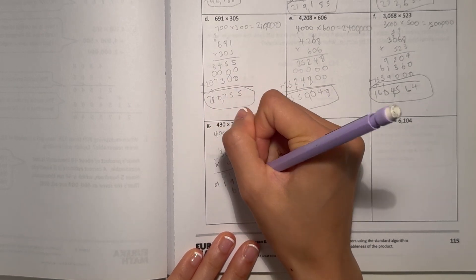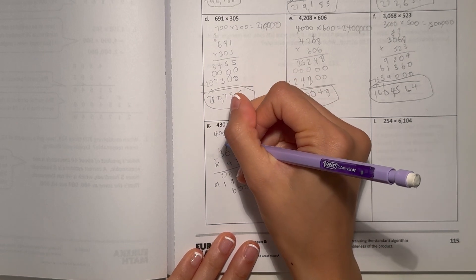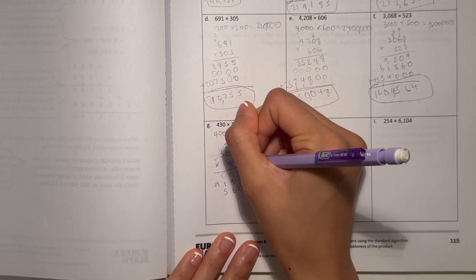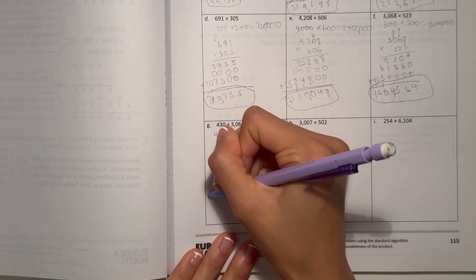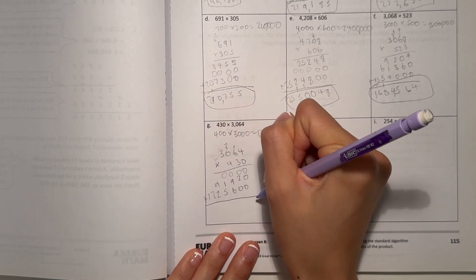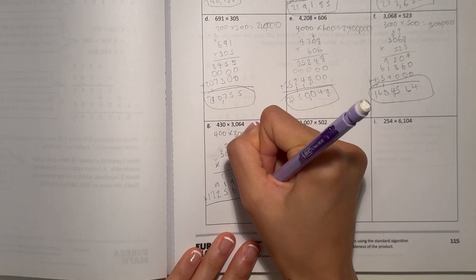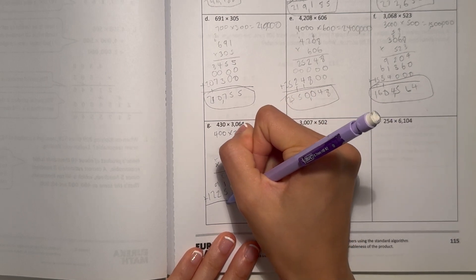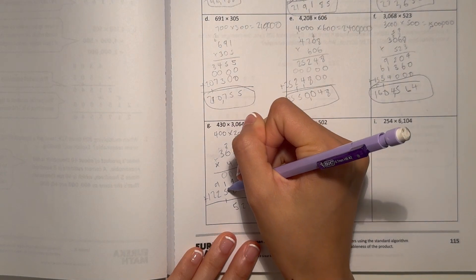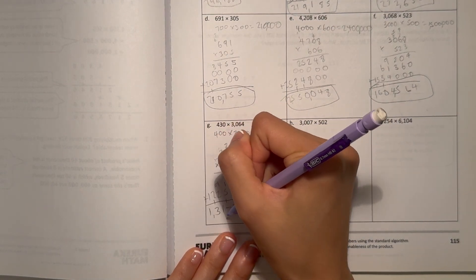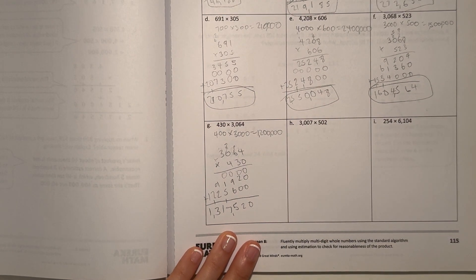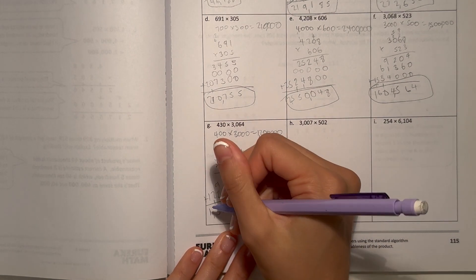Now 0 is 0. 4 times 4 is 16. 4 times 6 is 24, plus 1 is 25. 4 times 0 is 0, plus 2 is 2. And 3 times 4 is 12. So now let's add. 9 plus 6 is 15. 1,317,520. So our answer is pretty reasonable.